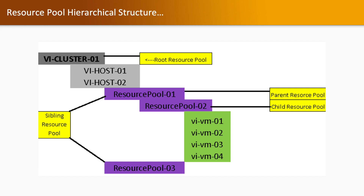Inside resource pool 01 (the parent resource pool), if we create any resource pool, that will be a child resource pool. And if we create a parallel resource pool at the same level as resource pool 01 — here we have resource pool 03 — that will be a sibling resource pool.